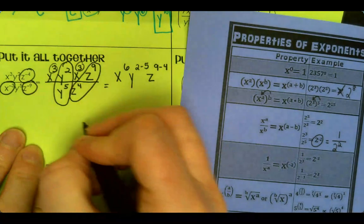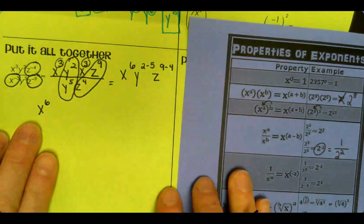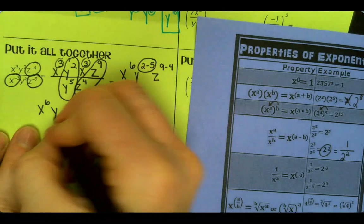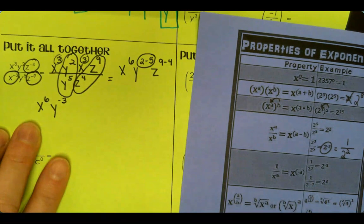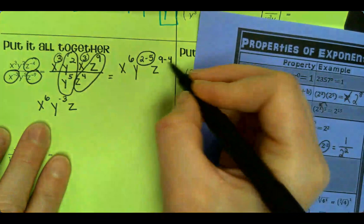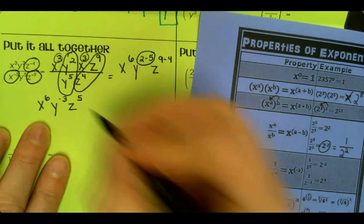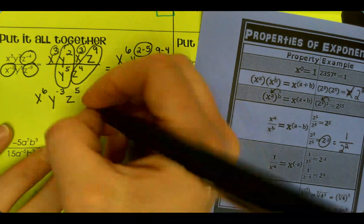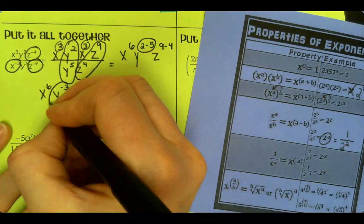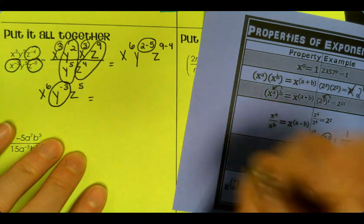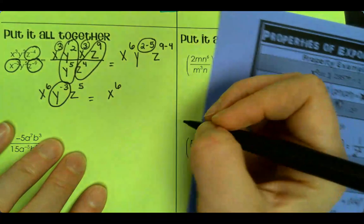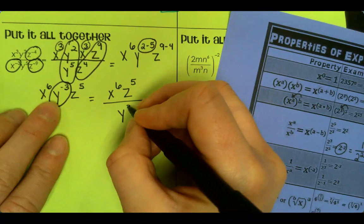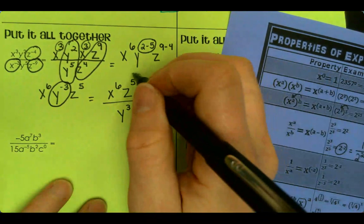Alright, so now I'm going to keep on going. So X⁶. And then I'm going to go ahead and subtract this. 2 minus 5 is a negative 3. And then Z⁹ minus 4 is positive 5. Nothing's on the bottom still. Now I need to do anything that has a negative exponent. So I'm going to start with Y negative 3. So X⁶ stays on top. Z⁵ stays on top. But Y negative 3 becomes Y positive 3 on the bottom. Yep, that is the final answer.